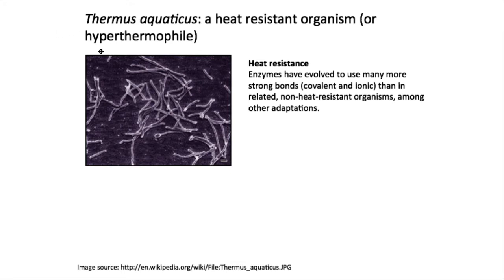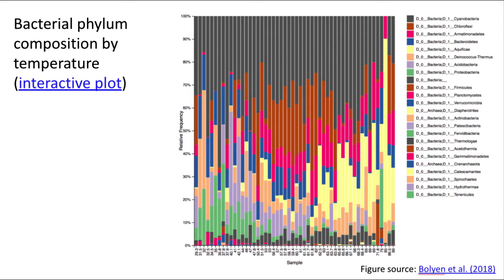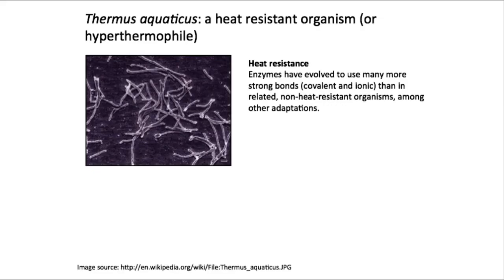Let's take a look at one of the organisms we observe there — Thermus aquaticus. We can see it represented in the taxonomic plot as the group Deinococcus-Thermus, showing up in most of our samples. It is a dominant or common organism in these hot spring environments.